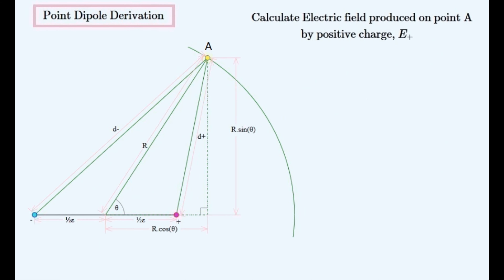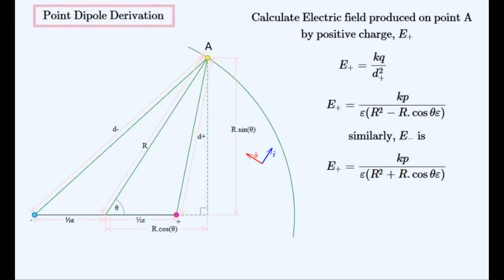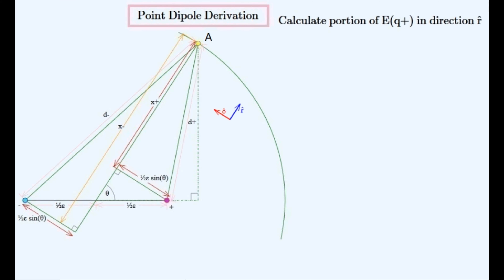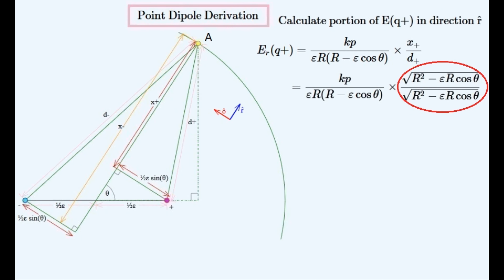Now that we have distances D plus and D minus, we can start to find the electric field from each particle. This is the formula for a single monopole charge that we'll use for each of the two charges. We get this after substituting the value for D plus into it, and we get the result for E minus using a similar method. We now have to get the component of the electric field in the R direction, away from the center. This will be the electric field multiplied by X plus over D plus. We can see when we substitute these values in that X plus and D plus are equal, so the component of E in the R direction equals the total E caused by the positive charge.